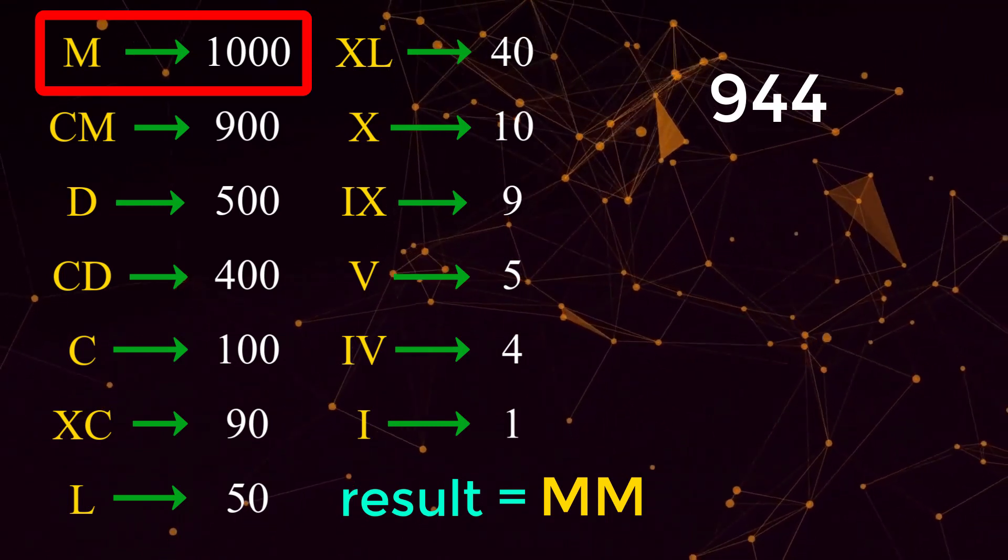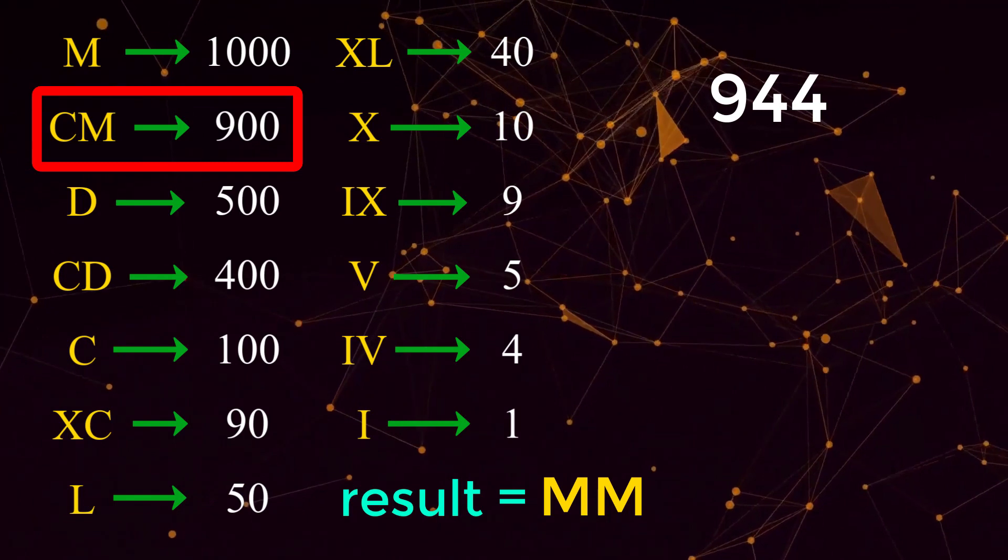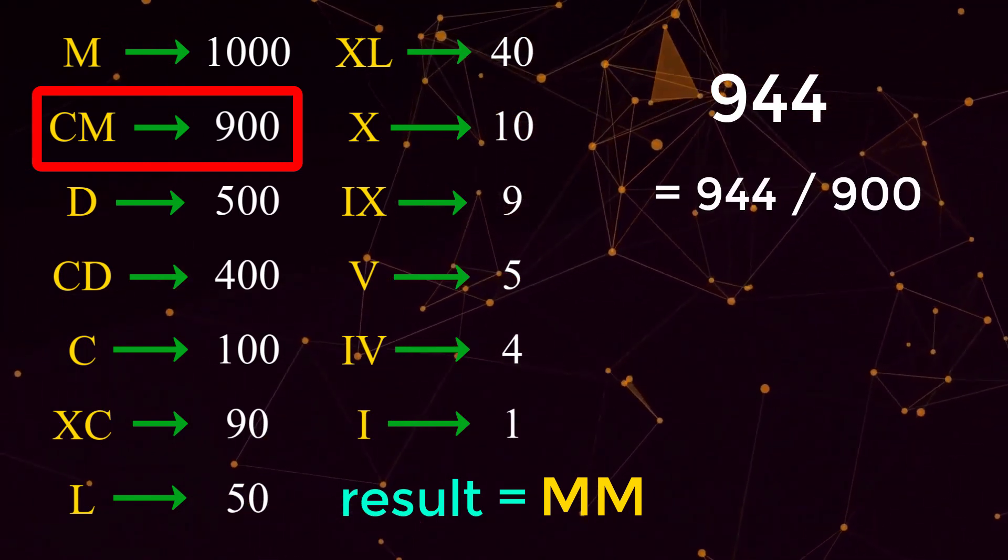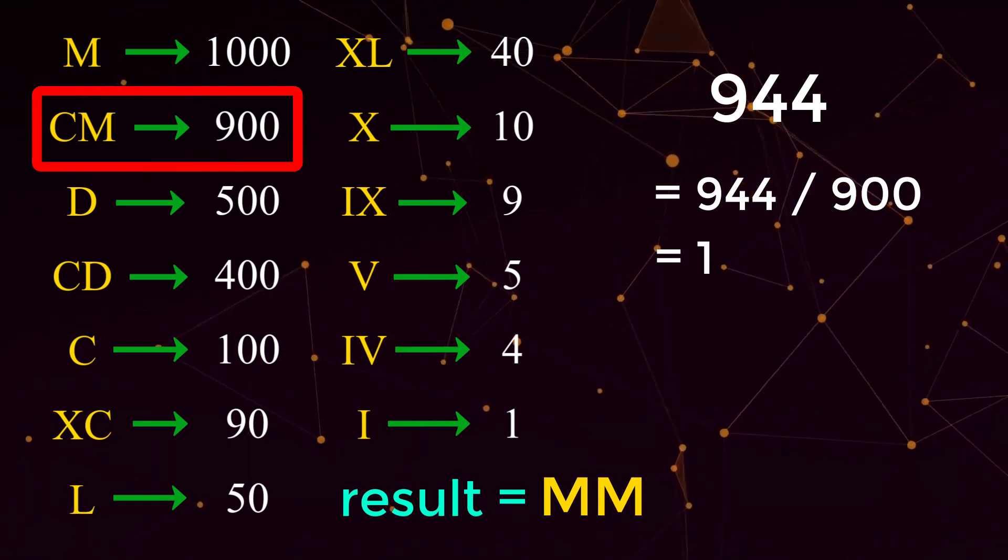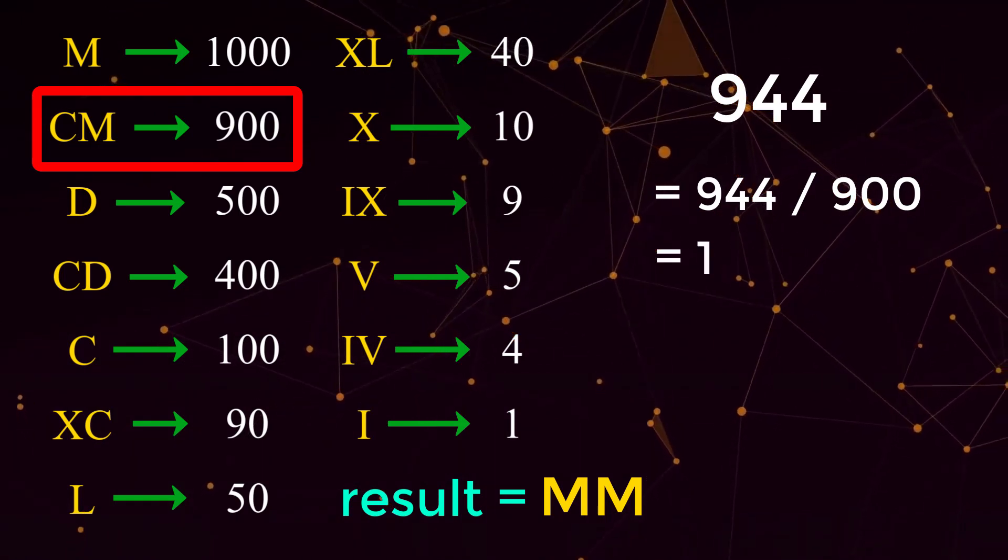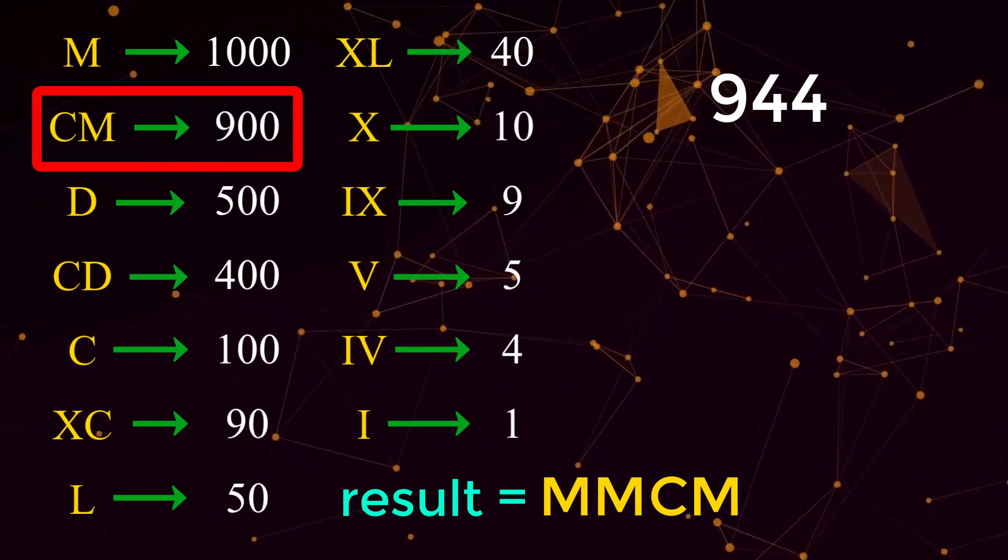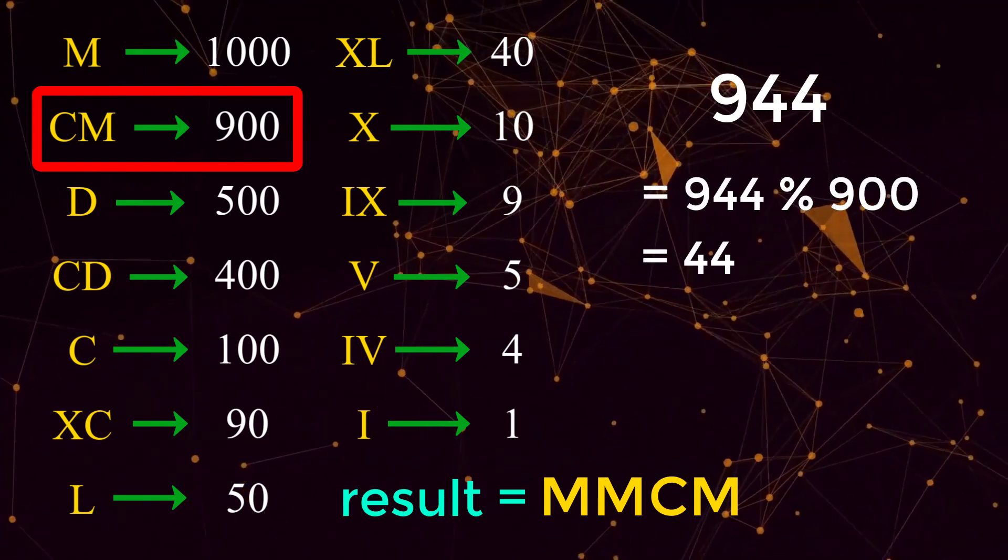We're now done with the numeral M so we move to the next highest numeral which is CM. CM is equal to 900. And just like before we're going to do 944 divided by 900 and that equals 1. So this number 1 is telling us we are going to have a single CM appended to our result. Once again we're going to use the modulus to chop off the most significant digit. 944 mod 900 is equal to 44.